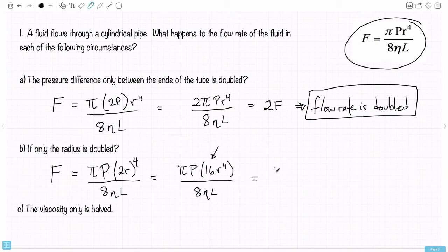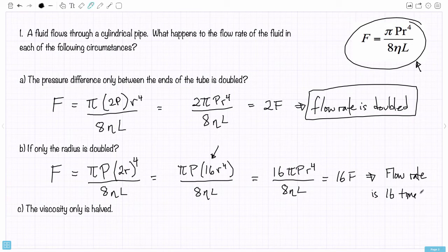And so that 16, that factor of 16 can go out in front, and we have π times pressure times the radius to the 4th power over 8 eta L. And π times P times R to the 4th over 8 eta L, well that's exactly the original flow rate. So by doubling the radius, I've actually increased the flow rate by 16 times. This is 16 times the original flow rate. The flow rate is now 16 times greater as a result of doubling the radius.